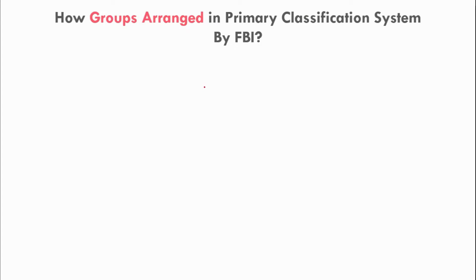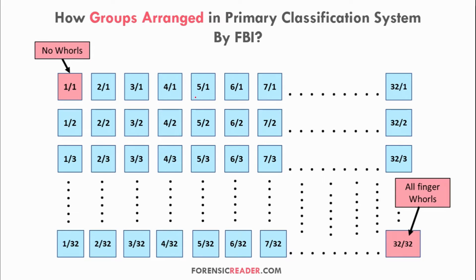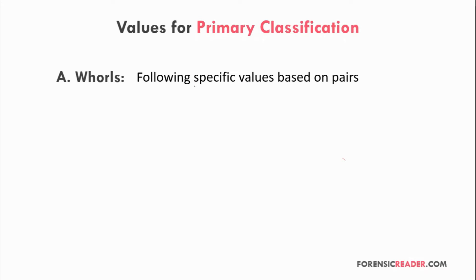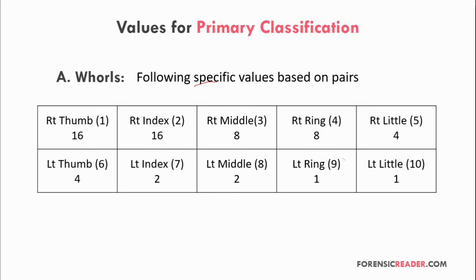The groups are arranged in the primary classification system by the FBI starting with 1/1. In the first row, the denominator 1 is constant and the numerator goes from 1 to 32. Similarly, for the second row the denominator 2 is constant and the numerator goes from 1 to 32, continuing until the denominator reaches 32. The group 32/32 represents that all fingers have whorls. For loops and arches, the value comes to be zero.